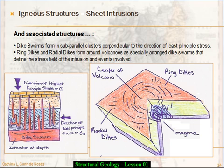Let's go into some sheet intrusions — other igneous structures. You've got dike swarms, which form in subparallel clusters. They are perpendicular to the direction of least principal stress. That may not mean a lot right now, but in the next lesson we are going to define these directions of stress and the strain that results from them. It can be a bit like beating your head against the wall because there's math involved, but it's very important and worth the effort.